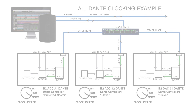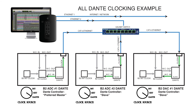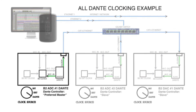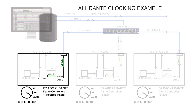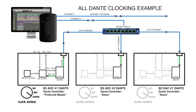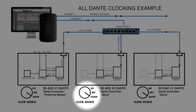In Figure 16 on page 17 of the manual, you can see the all-Dante clocking example. In this scenario, clock is being generated from the Dante card in ADC number 1, which sends clock to the B2 control and then out to the Dante network. Each of the other B2 Bombers are receiving clock from the Dante cards via the Dante network through the gigabit switch. Please note that each of the units are set to Dante clock.